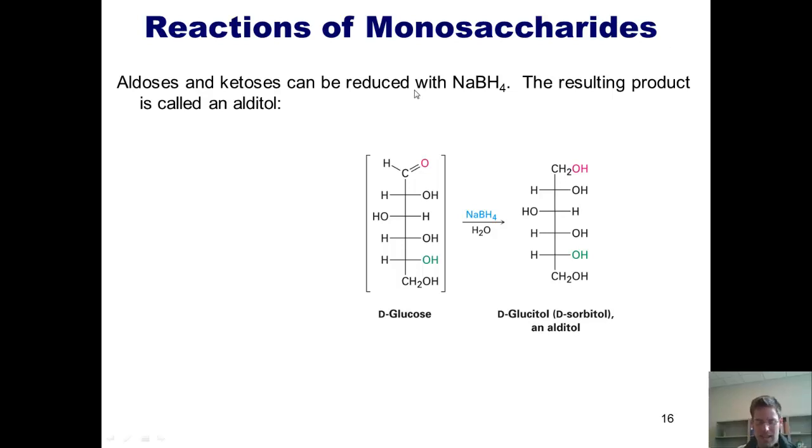So here it goes. Aldoses, which you should remember are just sugars that have aldehydes on one end when they're drawn in their open chain form, and ketoses, which are sugars that have ketones in them, can be reduced through treatment with sodium borohydride.